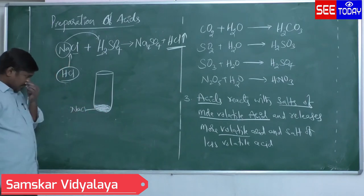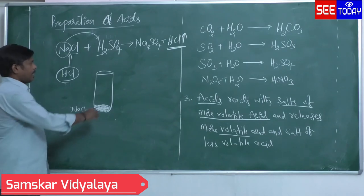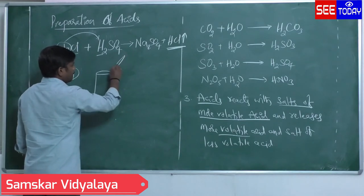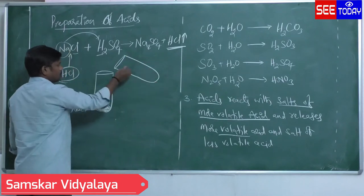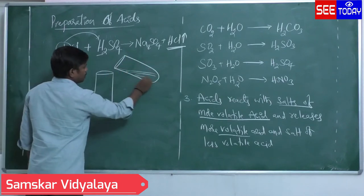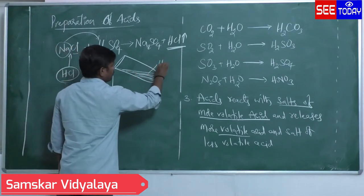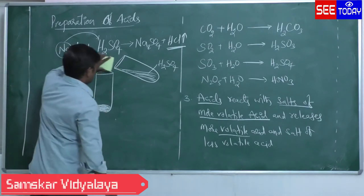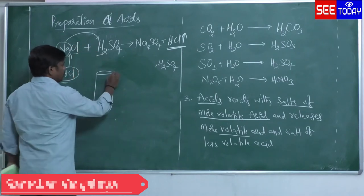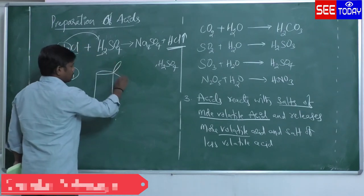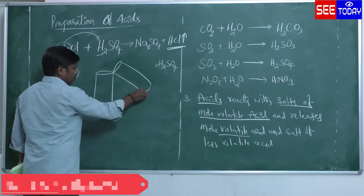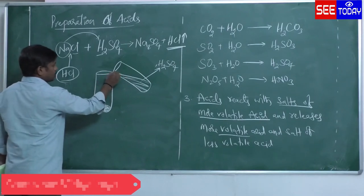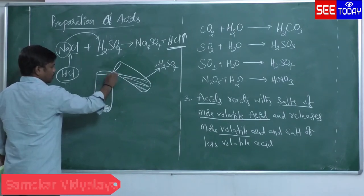After taking NaCl into the test tube, add H₂SO₄. When adding acid, you should follow this procedure: the mouths of the two test tubes must touch each other, and you should add the acid slowly from the side of the walls.